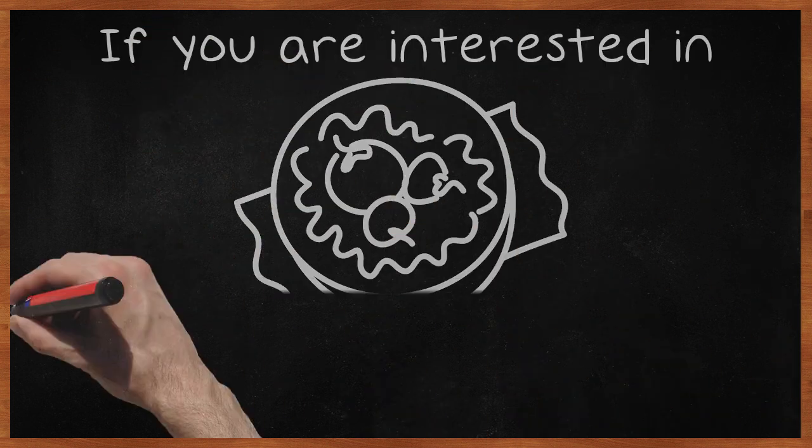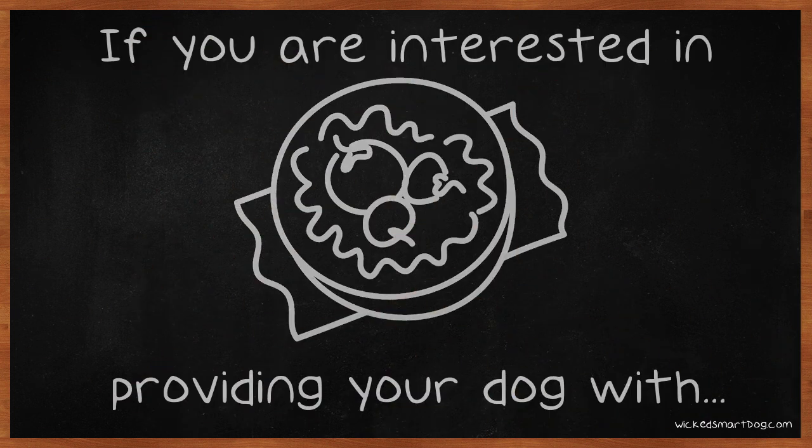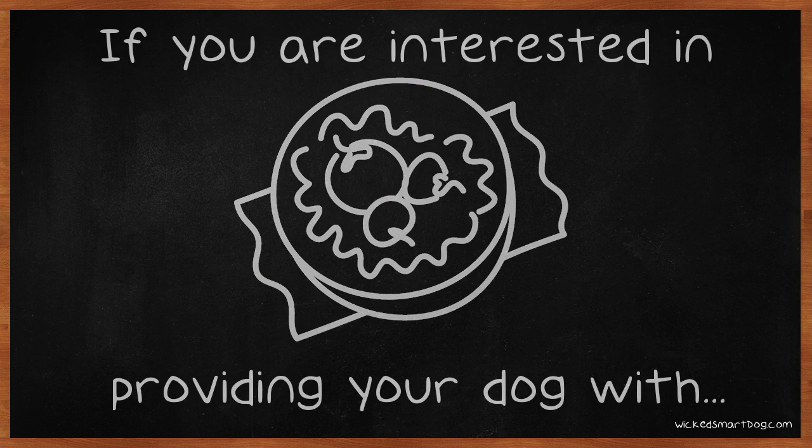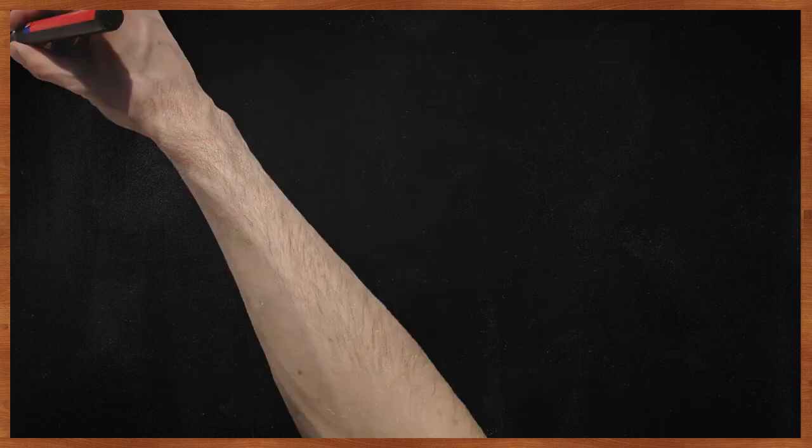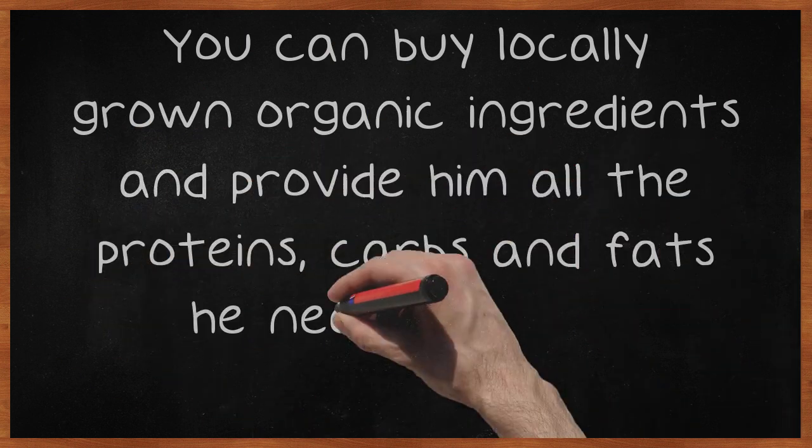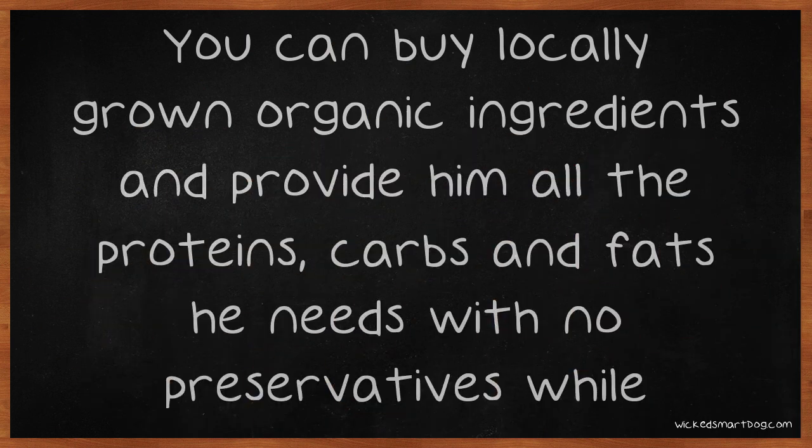If you are interested in providing your dog with the healthiest of diets and making positive contributions to the earth's environment, make his food from scratch. You can buy locally grown organic ingredients and provide him all the proteins, carbs and fats he needs with no preservatives while reducing the waste from packaging as well.